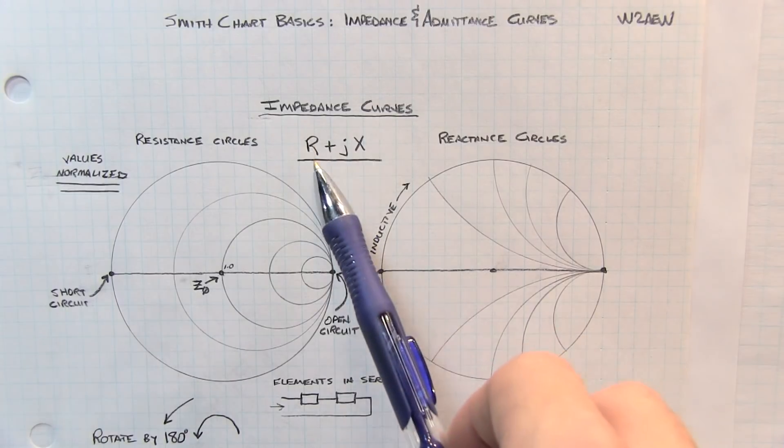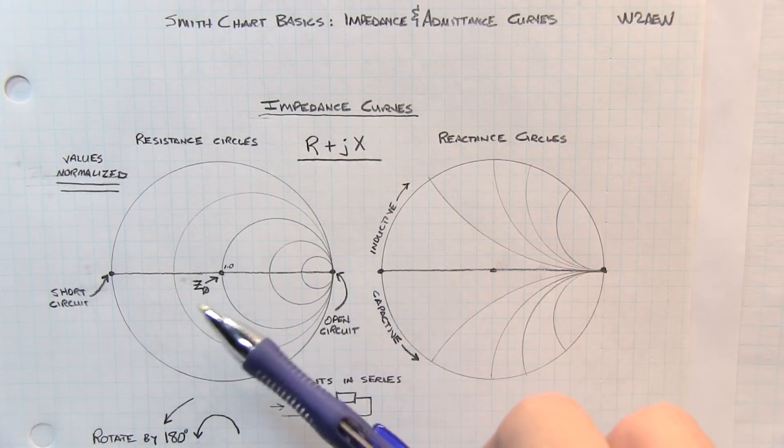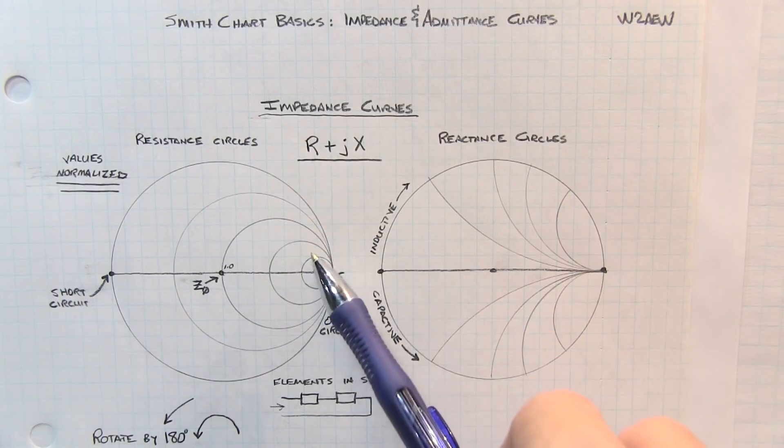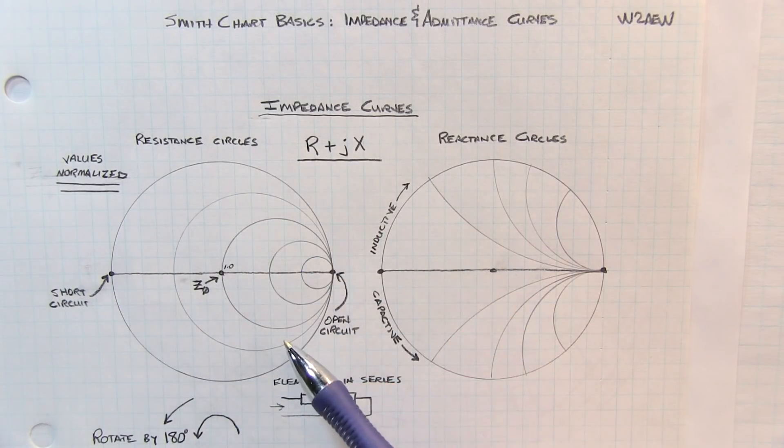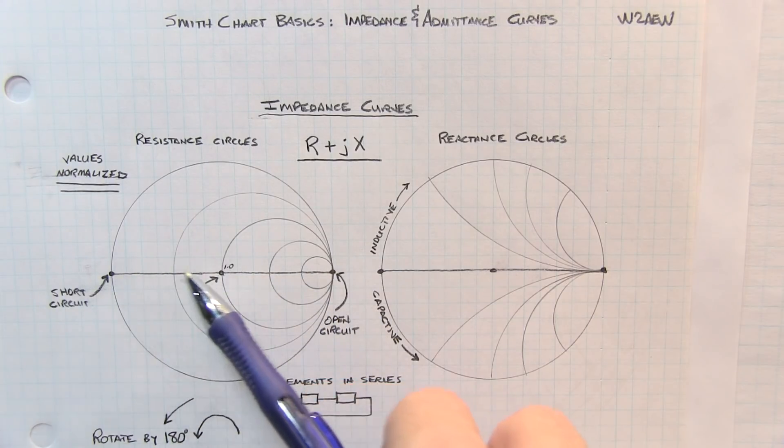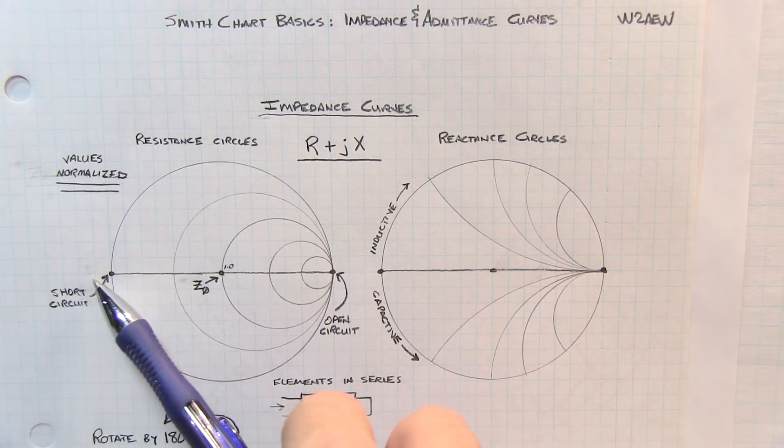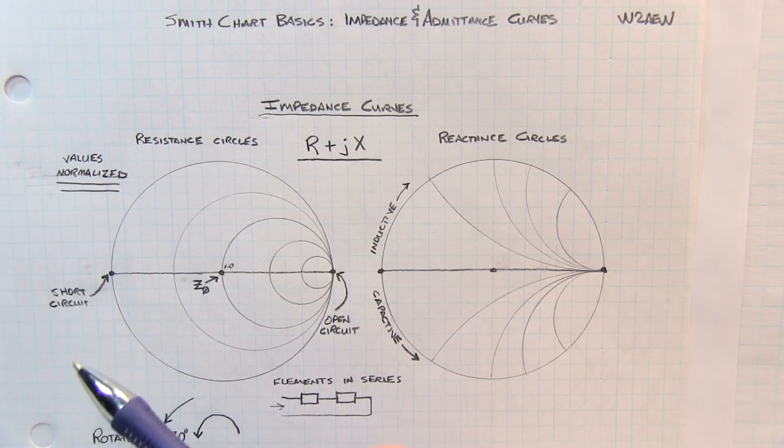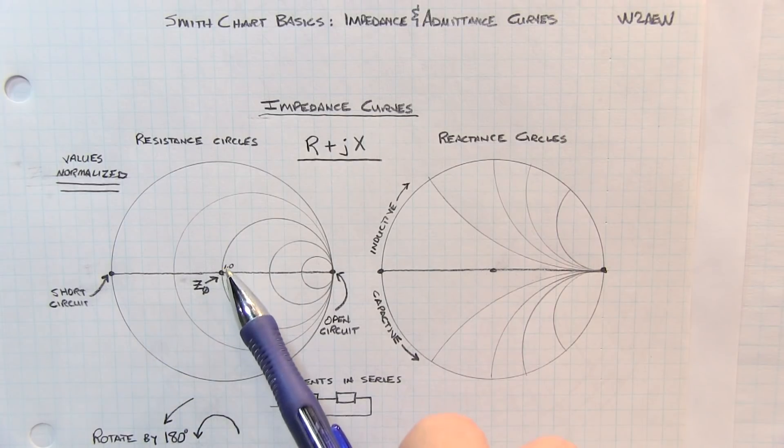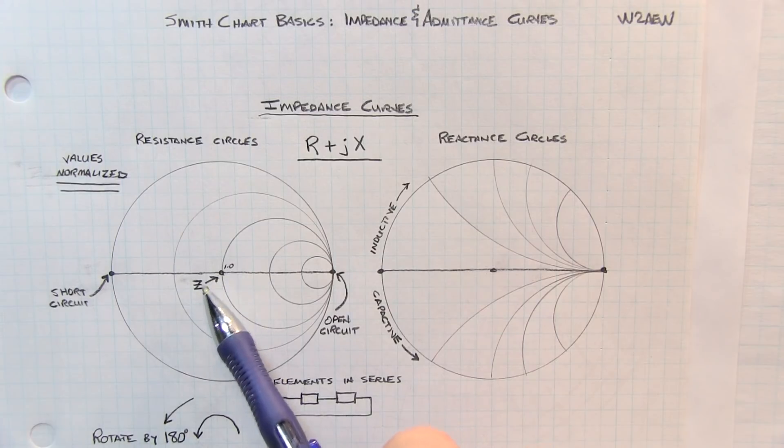Complex RF impedances are typically represented by a real part and a reactive part. On the Smith chart, the real part is represented by a series of concentric circles. The horizontal line through the center represents a pure resistance with no reactive component, and the center of the chart represents the system impedance. Most Smith charts are printed in a normalized fashion, meaning that the center will show 1.0 instead of 50 ohms, so that the chart can be used for other system impedances besides 50 ohms.